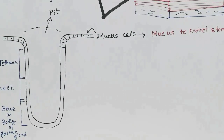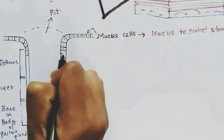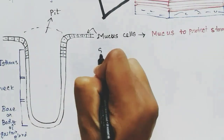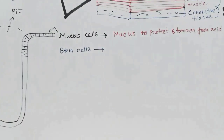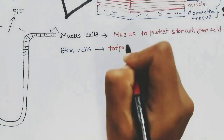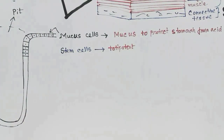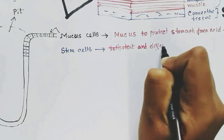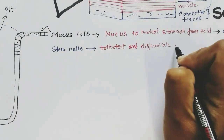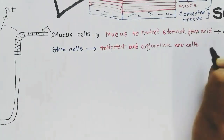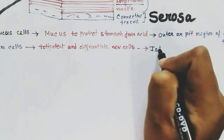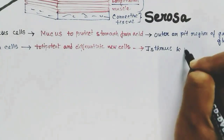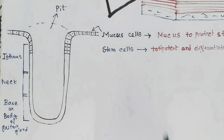In the isthmus region, we see cells called stem cells. These are totipotent cells and give rise to different cells as needed. These stem cells are situated in both the isthmus and neck region of the gastric gland.